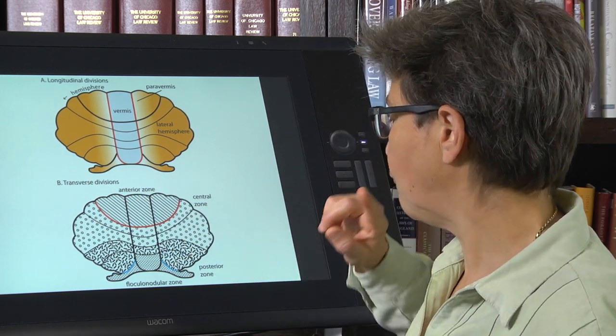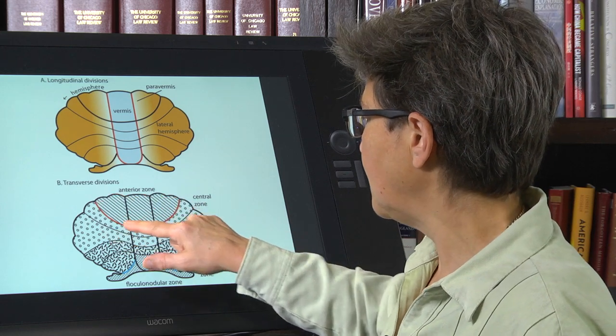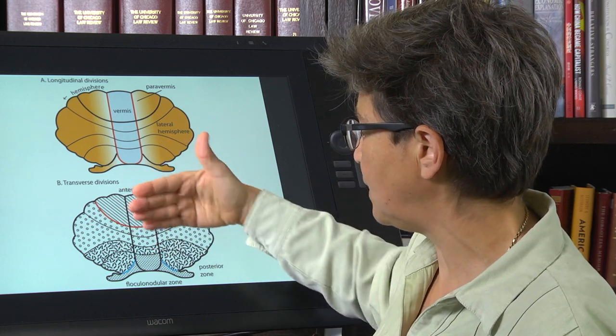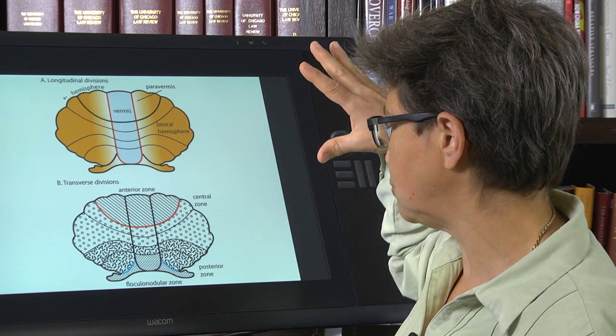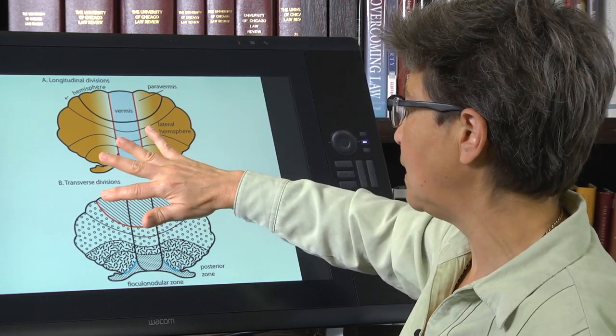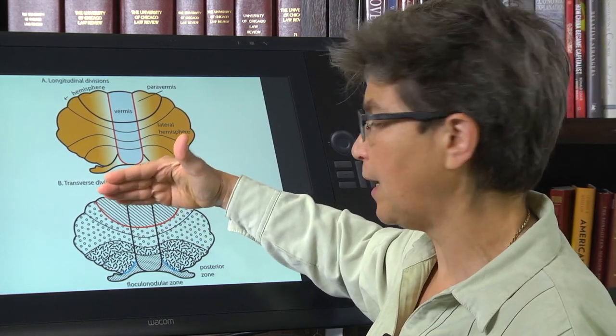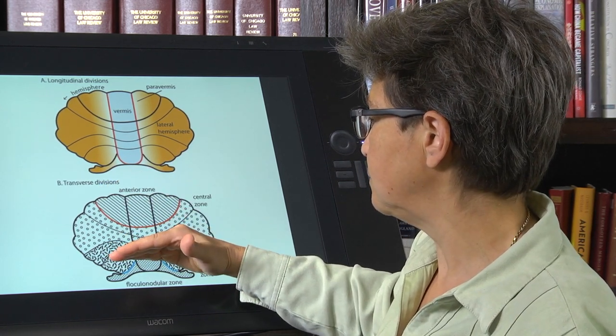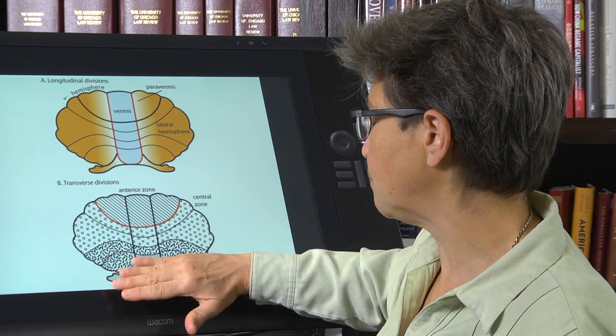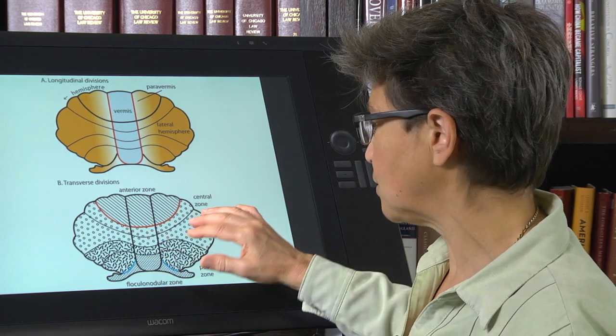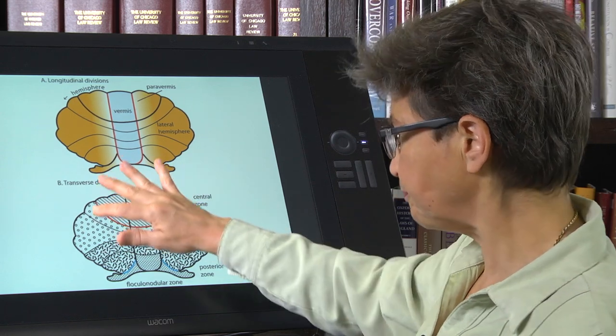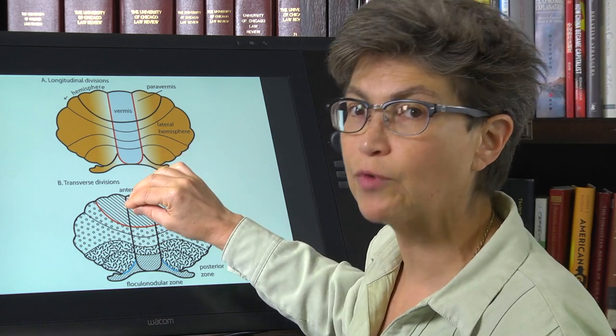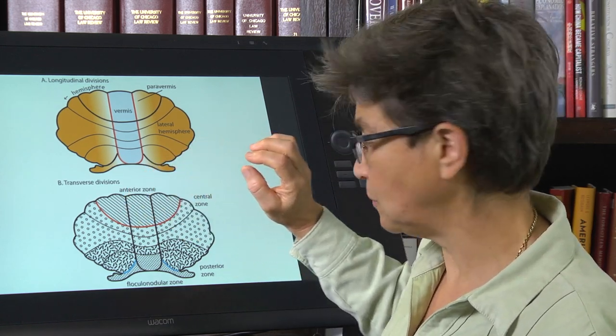Another point that I should make before we go to the next slide is that there is a large fissure here that separates, if we're looking sort of down on this from the top, and there's a large fissure that separates a smaller anterior zone from the larger rest of the cerebellum. It is this anterior zone where lesions have the greatest clinical effect.